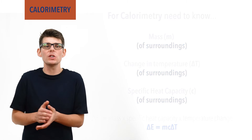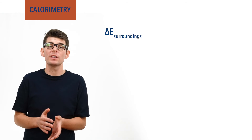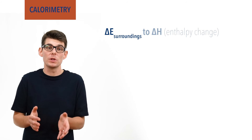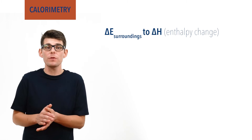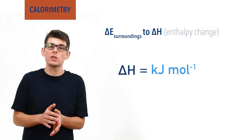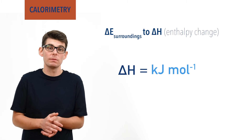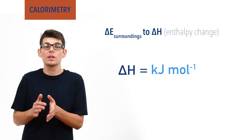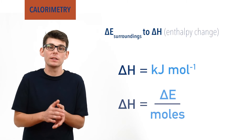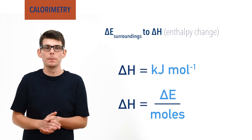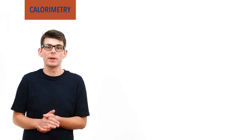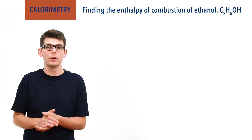Once the energy change of the surroundings has been found, we can turn our attention to the actual reaction taking place in order to find its enthalpy change. The units of enthalpy change are kilojoules per mole, meaning to convert the energy change measured using calorimetry — kilojoules or joules — to enthalpy change in kilojoules per mole, we have to divide the energy change by the moles of reactants in the reaction. Let's look at an actual example of a calorimetry experiment: finding the enthalpy of combustion of ethanol.